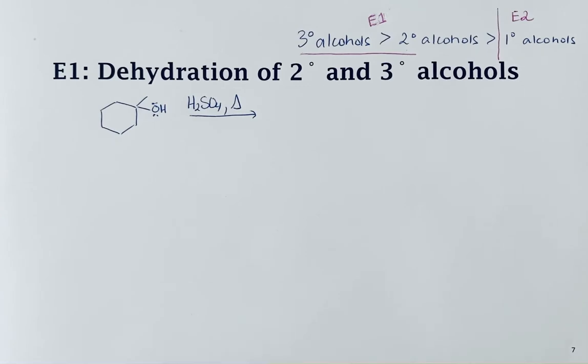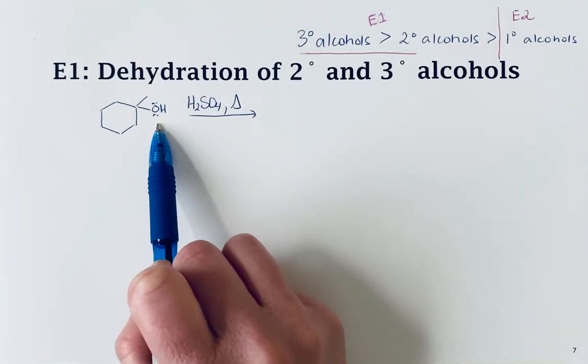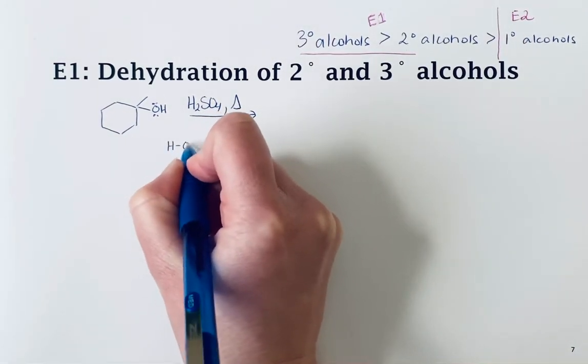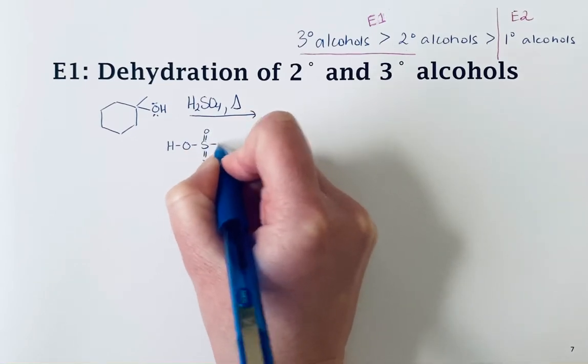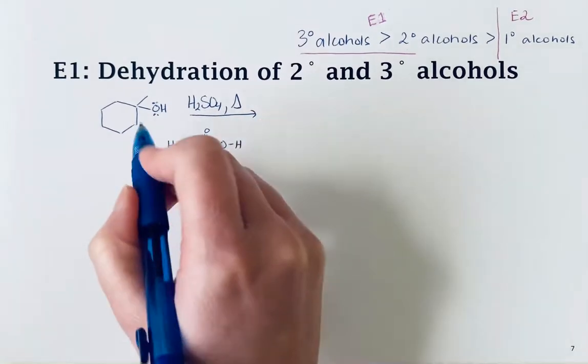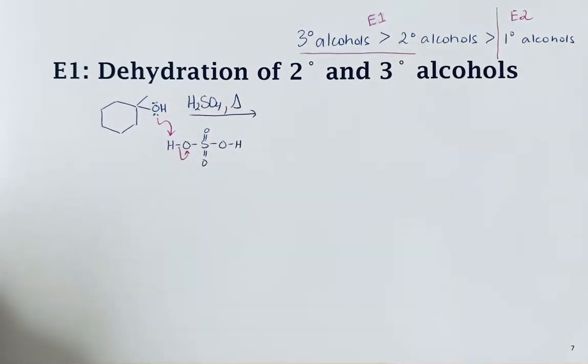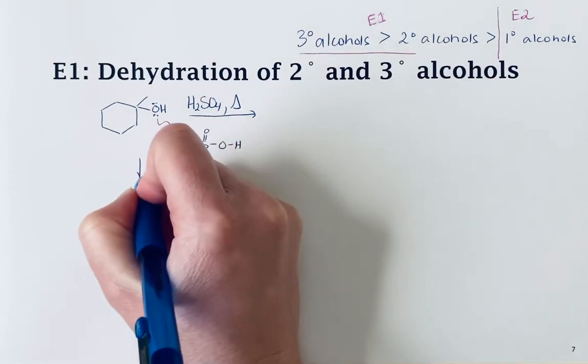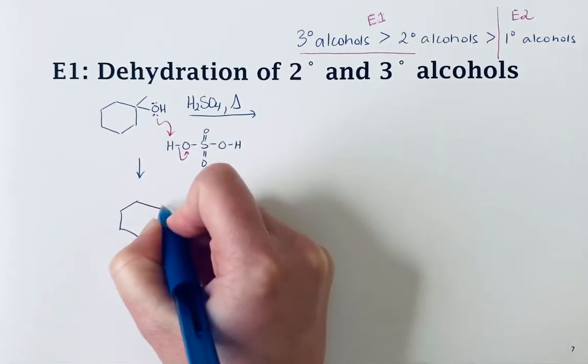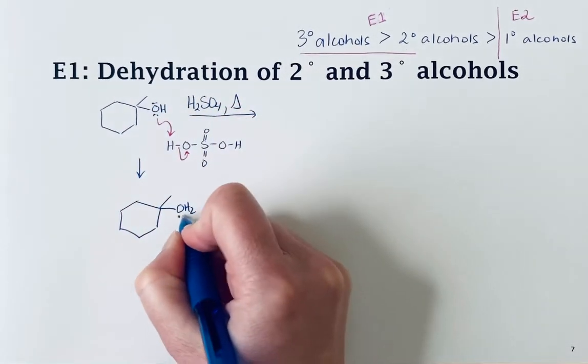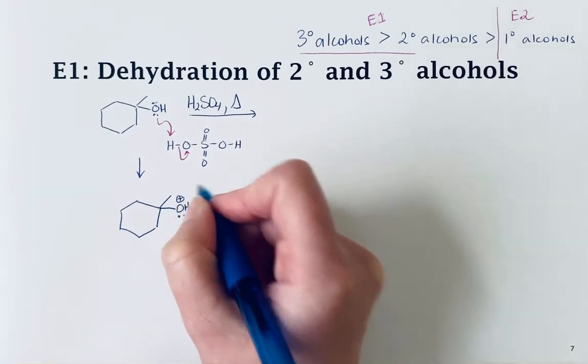The first thing we need to do for either an elimination or substitution reaction of an alcohol is take that really bad leaving group and convert it into a good leaving group. With sulfuric acid, the alcohol can act as a base and abstract a proton from the strong acid. This converts the leaving group from hydroxide—a terrible leaving group—into something that becomes a neutral water molecule when it leaves, making it a good leaving group.